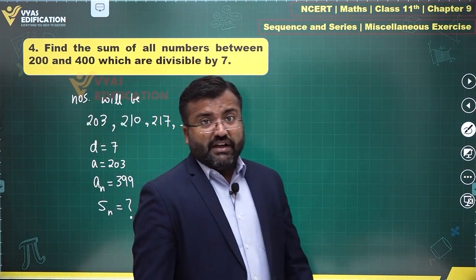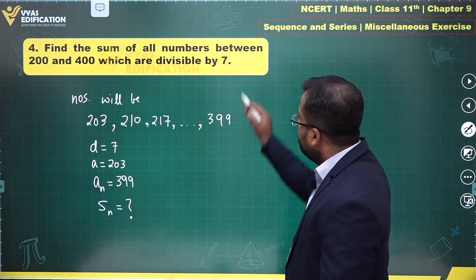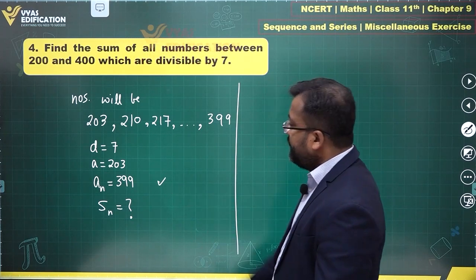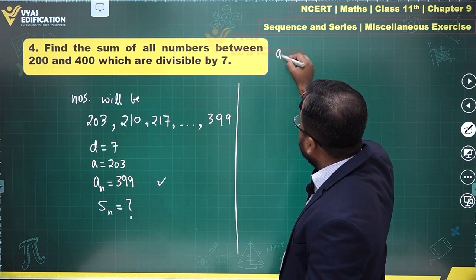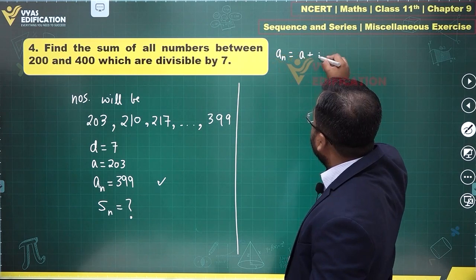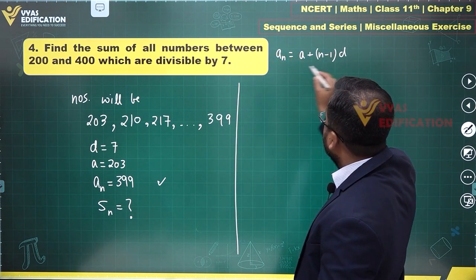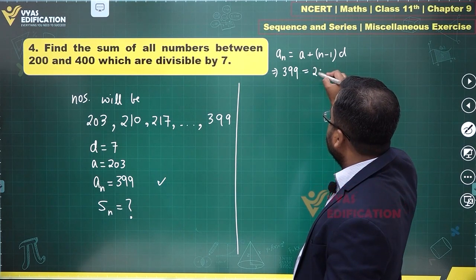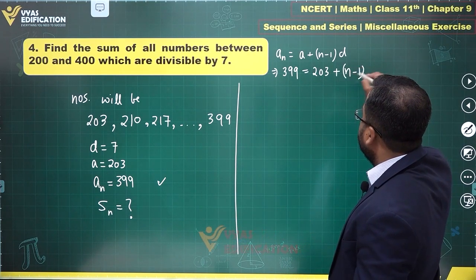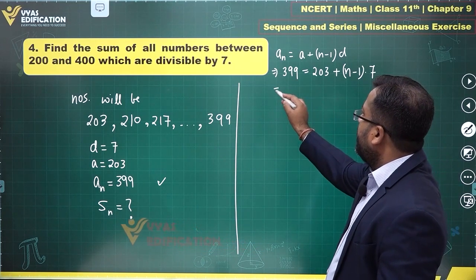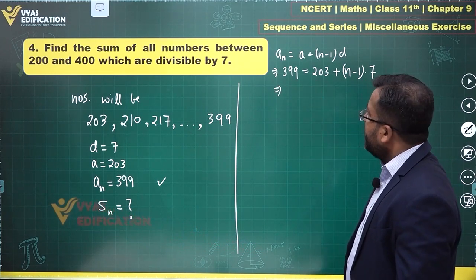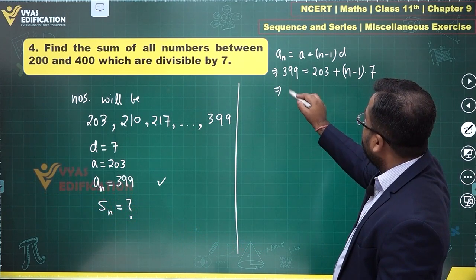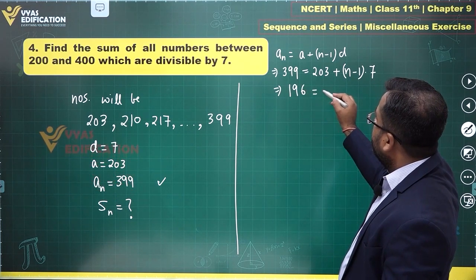For finding S_n we need n first of all. n can be obtained with the help of this formula: a_n equals a plus (n minus 1)d, which tells me 399 equals 203 plus (n minus 1) times 7. 399 minus 203 is 196, which equals (n minus 1) times 7.